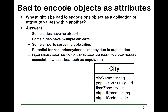Why is it bad to encode one object as a collection of attribute values within another? First, some cities may have no airports — for example, a city like Ithaca does not have its own airport — so how can you assign values to airport name and airport code? Second, some cities may have multiple airports — for example, New York City has La Guardia, JFK International, Newark Liberty, and so on — so how can you assign multiple airport names to a single airport variable? Third, some airports serve multiple cities, which creates a lot of redundancy by duplicating airport information in many city objects.